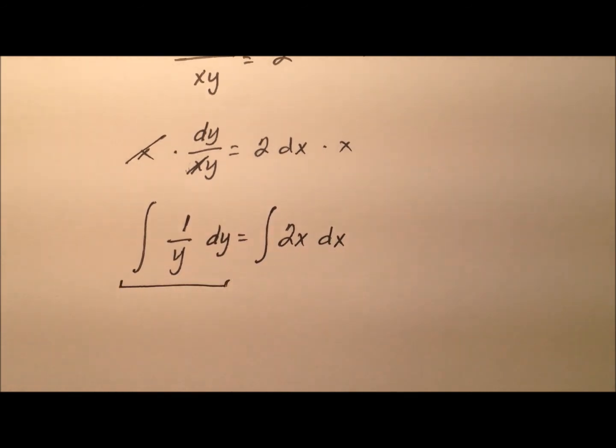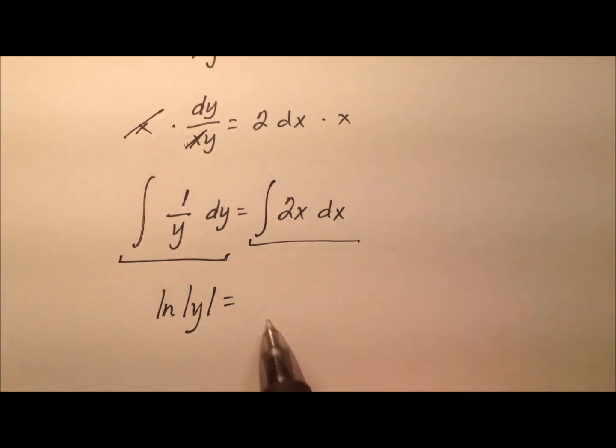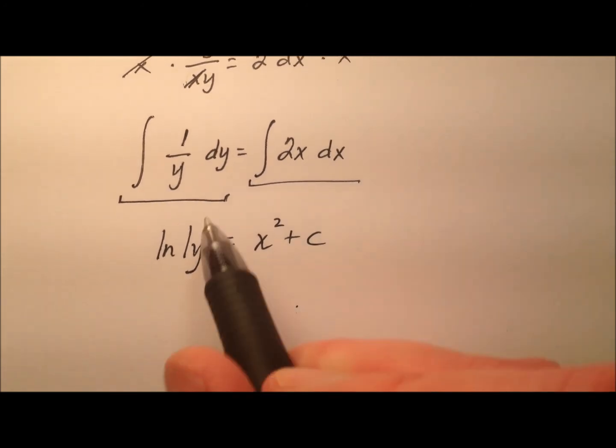So what is the integral of 1 over y with respect to y? Well, it'll be the natural log of the absolute value of y. And how about the integral of 2x with respect to x? Well, it'll be x² plus c. And remember, we only need to write the plus c on one of these sides. So we typically just choose the right side to put it on.